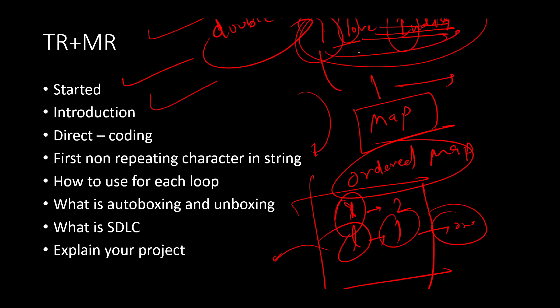Then they asked how to use for each loop, so for each loop is simple only. What is autoboxing and unboxing? This is the concept of Java. What is SDLC? SDLC is basically Software Development Life Cycle.